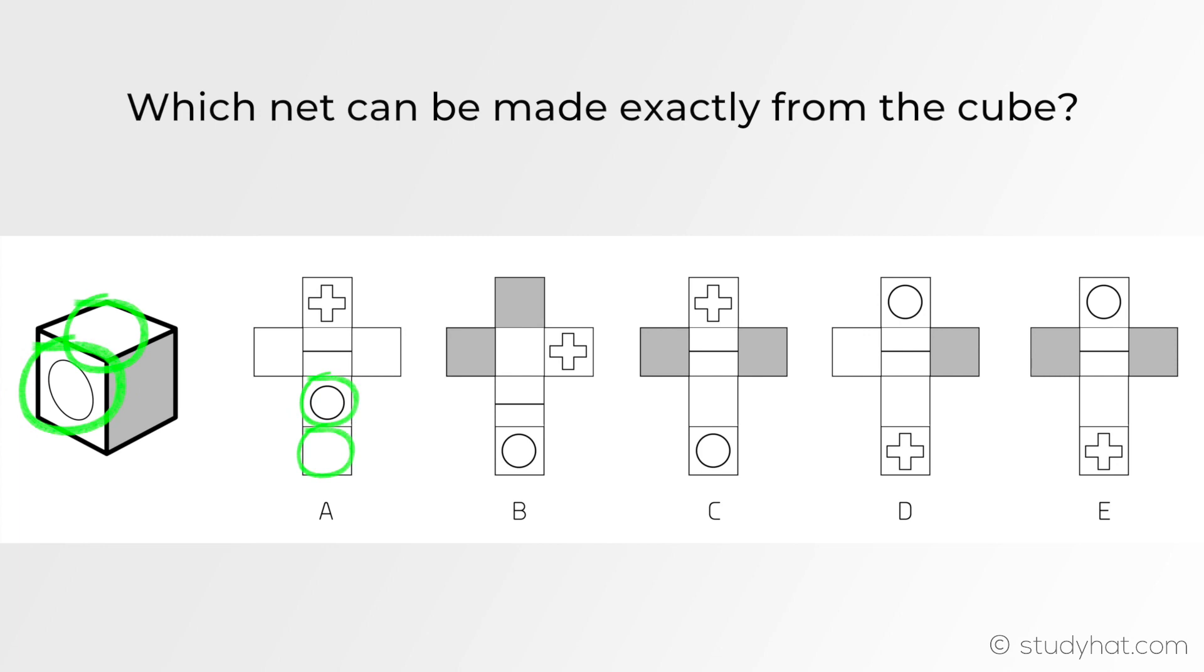We're not going to cross off A because these two faces are next to each other so it's not completely wrong. For B if you look these two faces are opposites but the figure shows them together and as we learnt in part 1 opposite faces won't show on the same side of the cube so B can be crossed off.